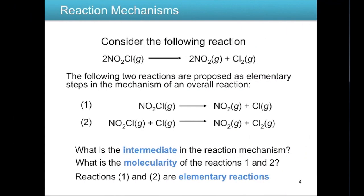Consider the reaction where two NO₂Cl produces two NO₂ gas plus a Cl₂ gas molecule. Two elementary steps are proposed: step one, where NO₂Cl breaks down into NO₂ and Cl gas; and step two, where another NO₂Cl reacts with the chlorine produced in step one to produce NO₂ and Cl₂. The intermediate here is chlorine — it is formed in step one but used up in step two.